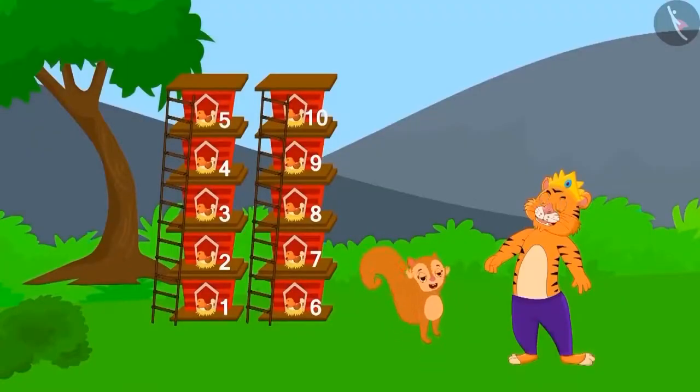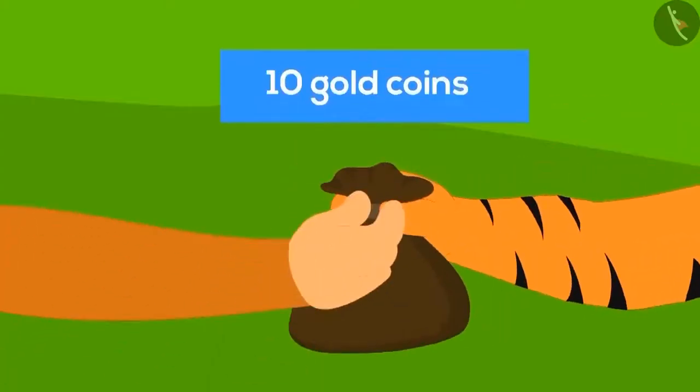Five multiplied with two make ten. Oh, wow! Chanda has also built the house perfectly. The king gave ten gold coins to Chanda too.